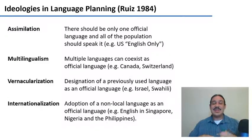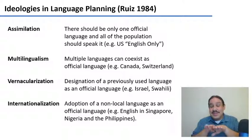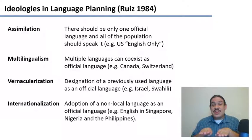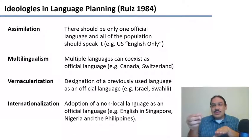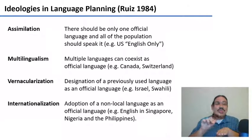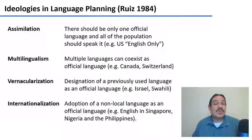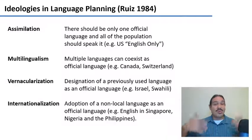Internationalization is the adoption of a non-local language as the official language of a territory. This might happen in places that are so multilingual that choosing one lingua franca could be difficult. For example, Nigeria has about 180 languages, so choosing any single one might put one community at an advantage and many others at a disadvantage. These societies have chosen to use English as the language of government and education as a sort of neutral alternative. This is the same in Singapore and the Philippines.